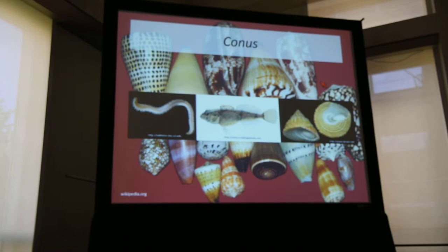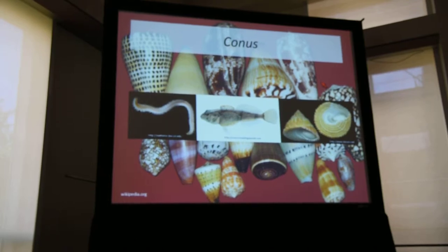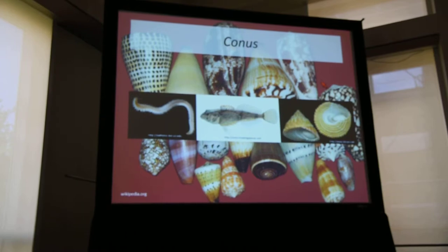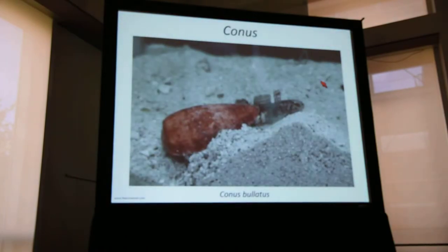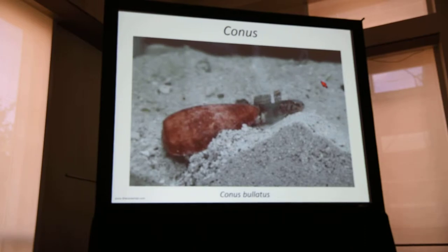Cone snails are notorious for their use of venoms to capture prey items, and niche space is structured according to diets, which are typically very narrow and highly specific. They can be categorized into three broad categories: worm-eaters, fish-eaters, and mollusk-eaters. Cone snails use highly toxic and quite complex venom to capture prey items, which are quite sizable and often much more agile than the cone snail itself.